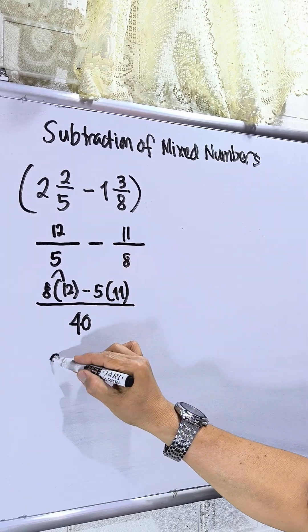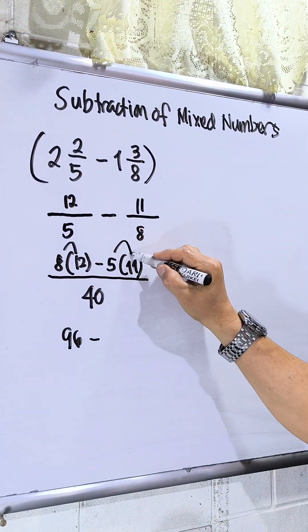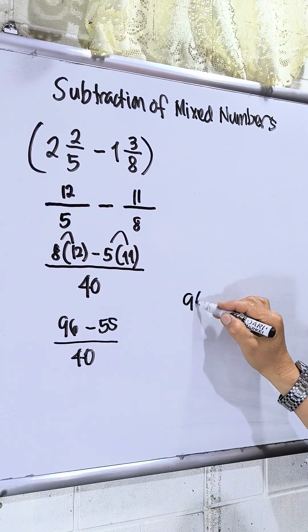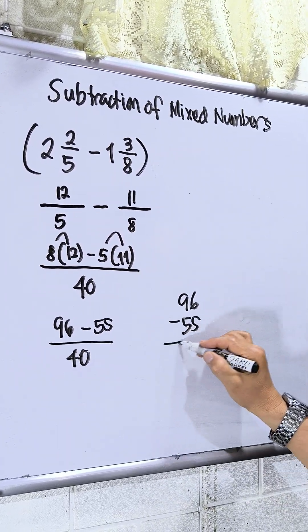So, multiply that is 96. Then, multiply also that is 55 over 40. So, 96 minus 55, that will be 1.